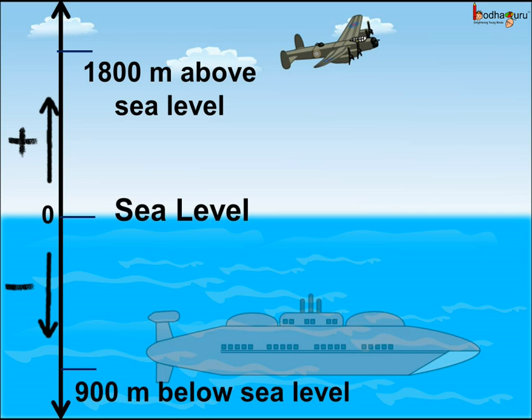And what about showing distances? Let us assume the mean sea level is 0. An aeroplane is flying at 1800 metres above the sea level. So, it is represented by plus 1800 metre as it is above sea level and we take it as positive.